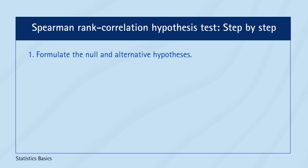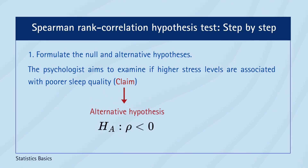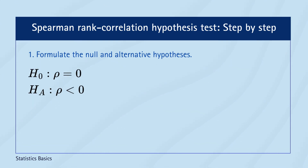In our case study, the psychologist aims to examine if higher stress levels are associated with poorer sleep quality. This implies a hypothesis proposing a negative monotonic association between the two variables, while the null hypothesis states no such association. Therefore, we will conduct a left-tailed test to evaluate the evidence supporting the claim of a negative relationship.